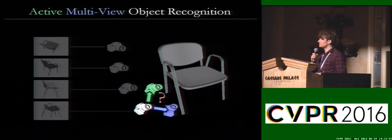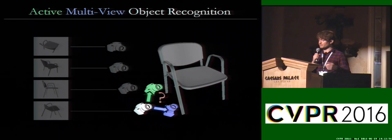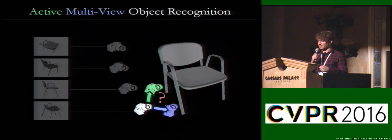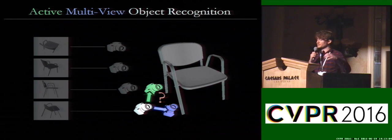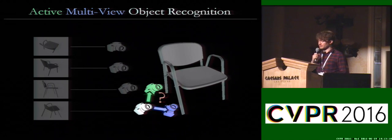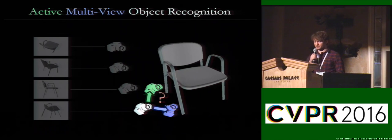Another factor in robotics is that you have the ability to actually move the camera around the object actively. For example, should the white camera move to the green position or the blue position in the next step? We want to come up with a way of recognizing the object as quickly as possible. This is known as active recognition.